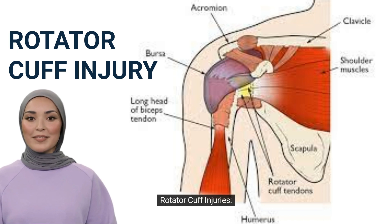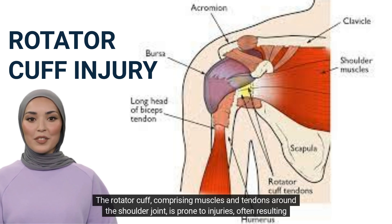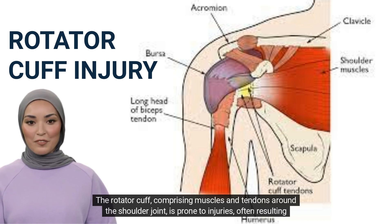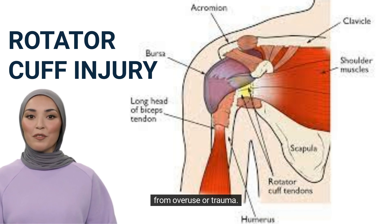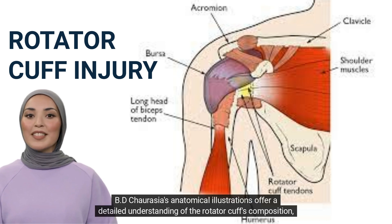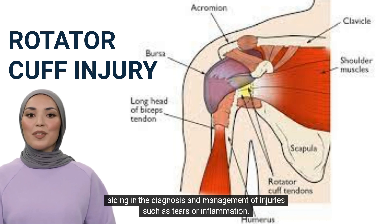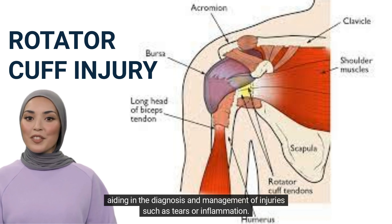Rotator Cuff Injuries: The rotator cuff, comprising muscles and tendons around the shoulder joint, is prone to injuries, often resulting from overuse or trauma. B.D. Chaurasia's anatomical illustrations offer a detailed understanding of the rotator cuff's composition, aiding in the diagnosis and management of injuries such as tears or inflammation.